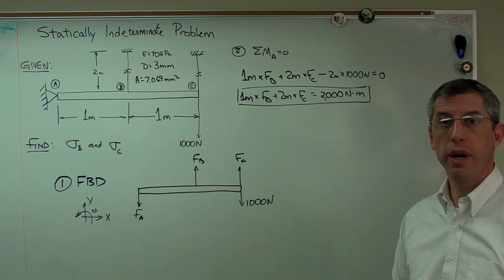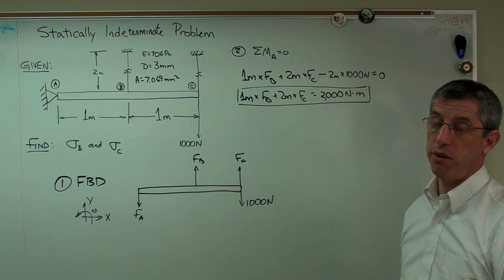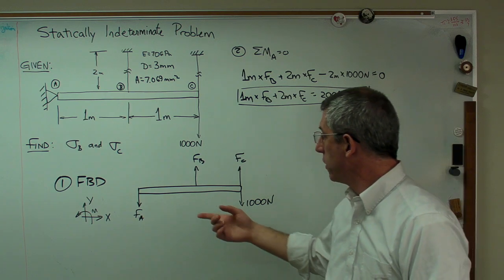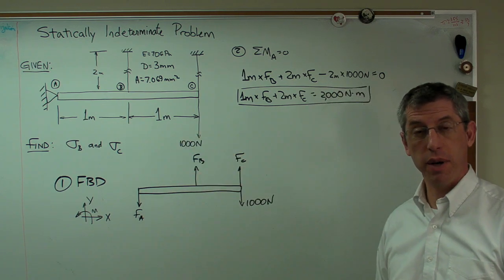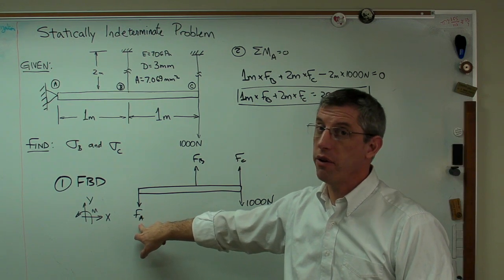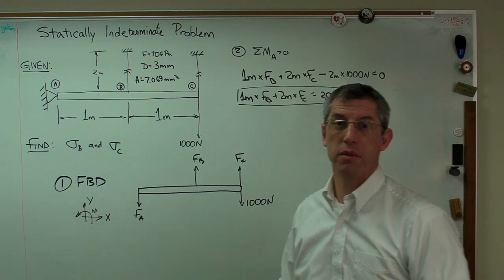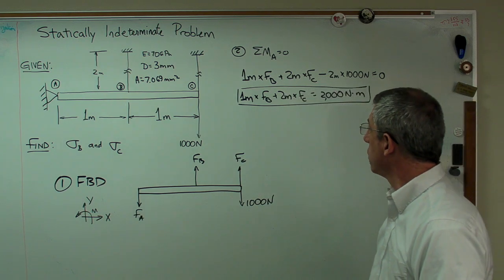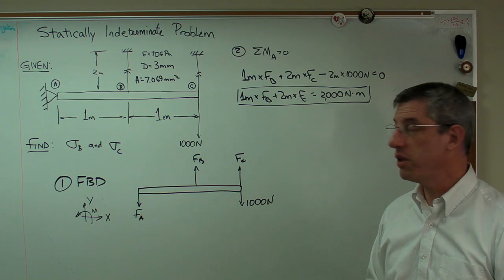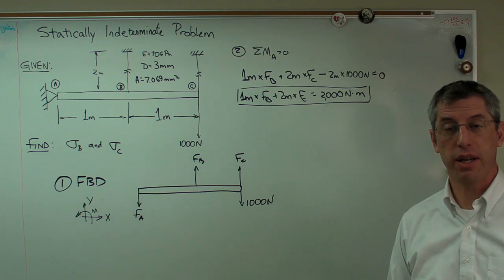We've got one equation but two unknowns. We don't know what Fb is and we don't know what Fc is. If we have two unknowns, we need two equations. So what do we do? I can sum the forces in the vertical direction. That will give me another equation. But if I do that, now all of a sudden I've got another unknown too. I'll have to solve for Fa. Well, I don't care what Fa is. It's not asked for in the problem. So summing the forces in the vertical direction adds another equation, but it also adds another unknown. That's a statically indeterminate problem.